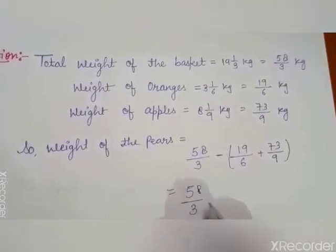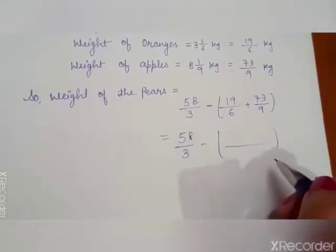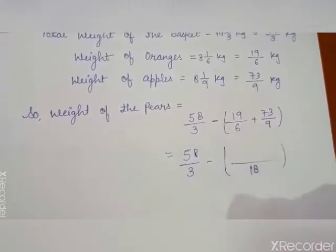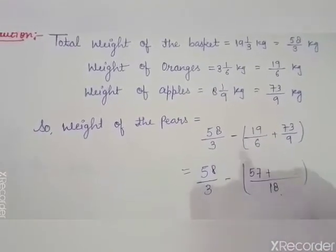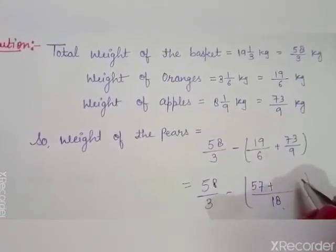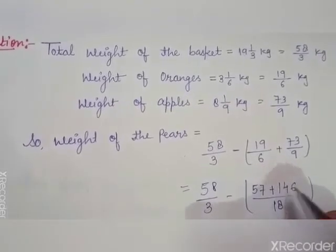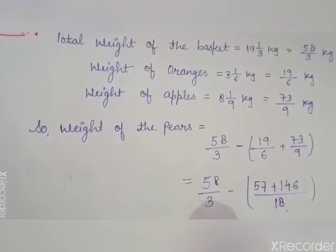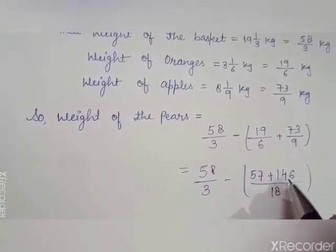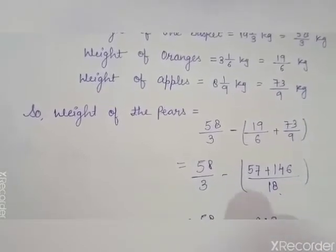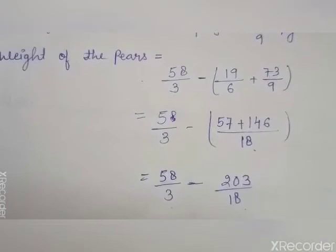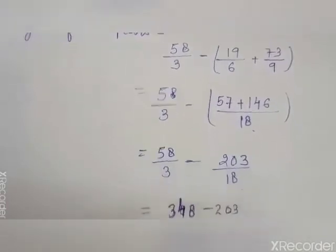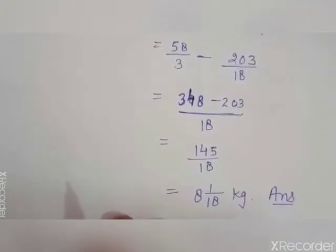First, we solve the bracket. We take the LCM of 6 and 9, which is 18. Then: 6 divides into 18 by 3, and 19 into 3 is 57. Plus, 9 divides into 18 by 2, and 73 into 2 is 146. Adding 57 plus 146 gives 203 by 18. Then taking the LCM of 3 and 18 and completing the subtraction, we get 8 whole 1 upon 18 kg — that is the weight of the pears in the basket.